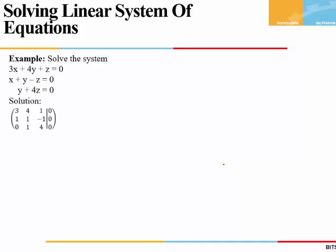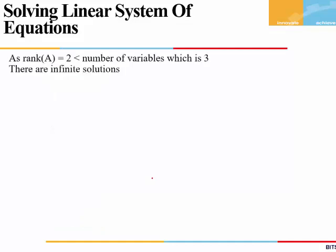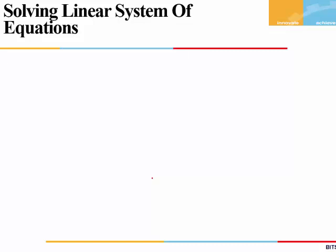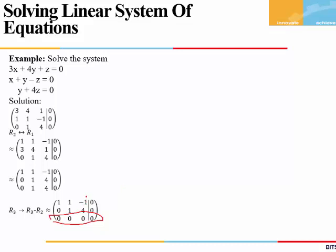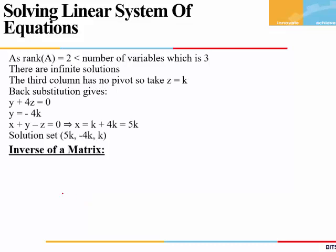Let's look at another example. We form the augmented matrix and again interchange rows 1 and 2 to get pivot 1 in the first row. We make the two values below the pivot equal to 0. Bringing the matrix to REF form, we see that the last row is a row of zeros. So the rank of the matrix is 2 — there are only two non-zero rows — which is less than the number of variables, giving infinite solutions. Because there is no pivot in the third column, the variable z is taken as a parameter k and becomes the independent variable. On back substitution, we get the solution as x = 5k, y = −k, z = k.